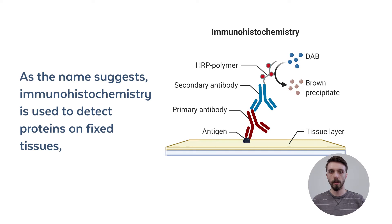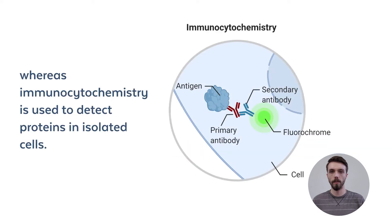As the name suggests, immunohistochemistry is used to detect proteins on fixed tissues, whereas immunocytochemistry is used to detect proteins in isolated cells.